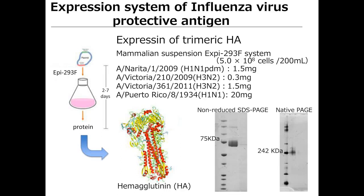We produce each HA molecule by the expression system using the Expi293F cells. With this system, we have already prepared more than 10 HA molecules in trimeric form, which is the native form, and we can obtain milligram-order quantities of each HA molecule from 200 milliliter cultures.